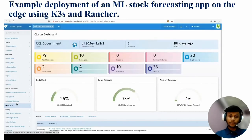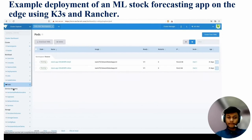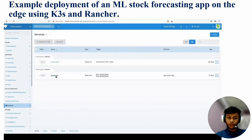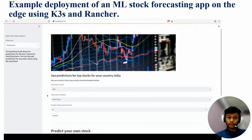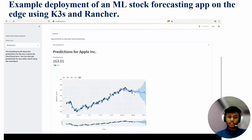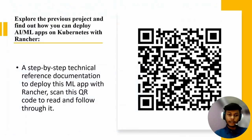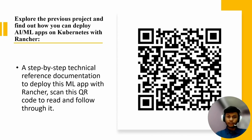Let's see an example deployment of an ML stock forecasting app on the edge using K3s and Rancher. This is the Rancher interface where I have deployed a stock price predicting app with two pods running for it. We can also see the services exposing it to the node port, so we can access it via the node port. The app lets you select your country, a short term or long term view, and the number of days you want to predict — it will then show predictions for all stocks relevant to your country. You can explore the project and find out how to deploy this type of AI and ML app on Kubernetes with Rancher. There is also step-by-step technical reference documentation to deploy this app to Rancher, viewable using the QR code shown.